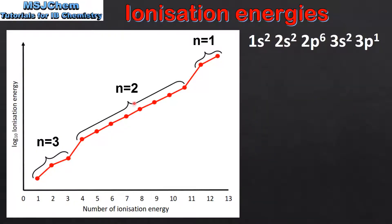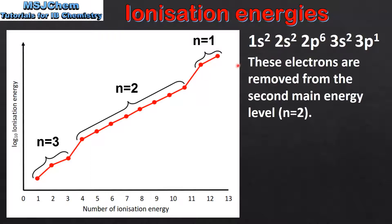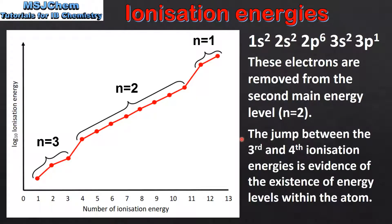Next we look at the electrons in the second section. These electrons are removed from the second main energy level — the six electrons in the 2p sub-level and the two electrons in the 2s sub-level. The jump between the third and fourth ionization energies is evidence of the existence of energy levels within the atom. The first three electrons are removed from the third main energy level, whereas the next eight electrons are removed from the second main energy level.